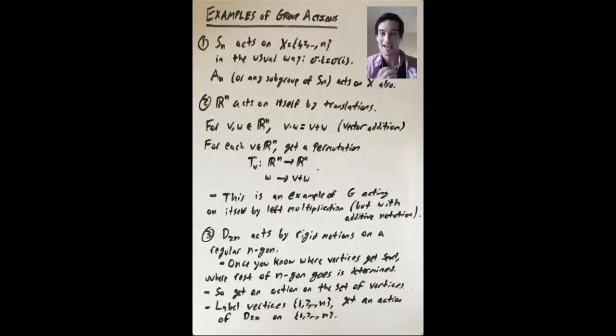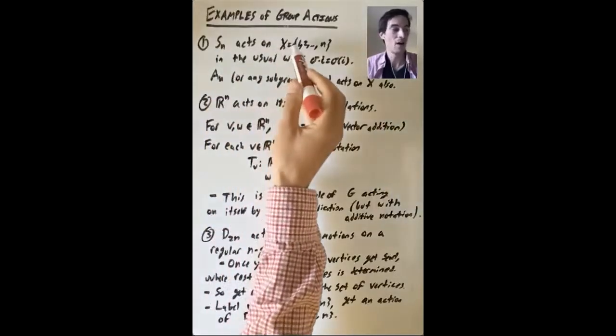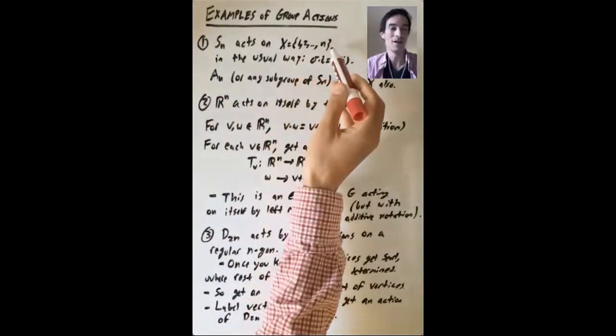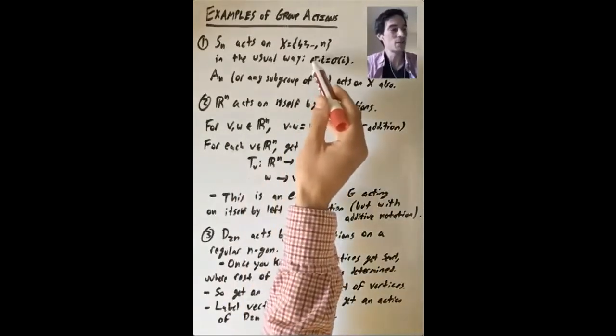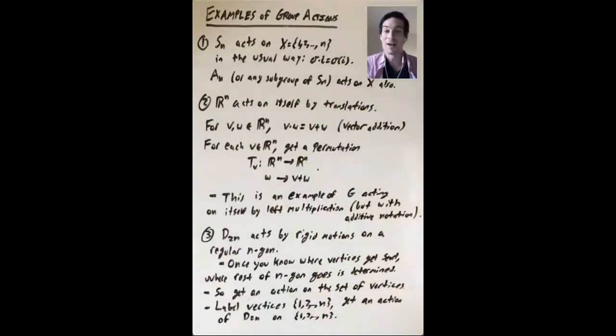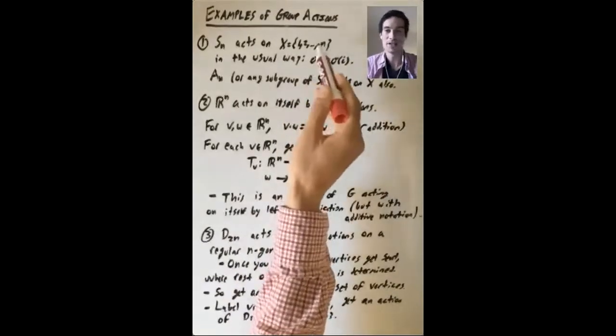So let's start with an obvious one. Sn acts on the set 1, 2 up to n. Let x be equal to that set. And what is this group action? How does a permutation sigma act on an element i in x? It gets sent to sigma i, which is another element of x.